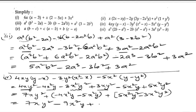And for the x²y² terms: combining gives 2x²y². So the answer for the fourth bit is 7xy² minus 9x²y plus 2x²y².